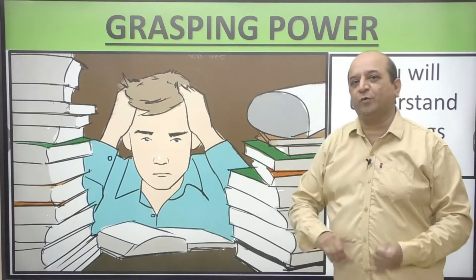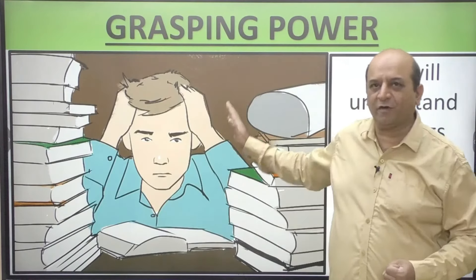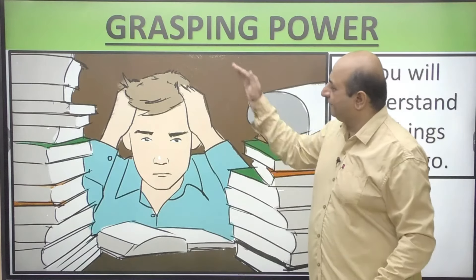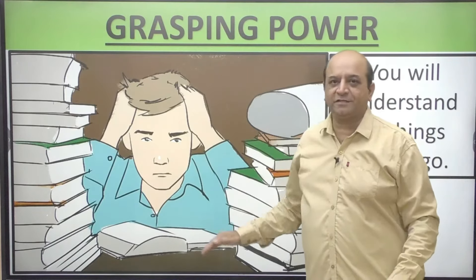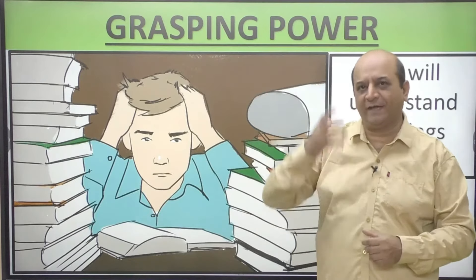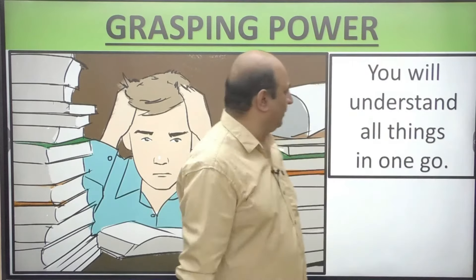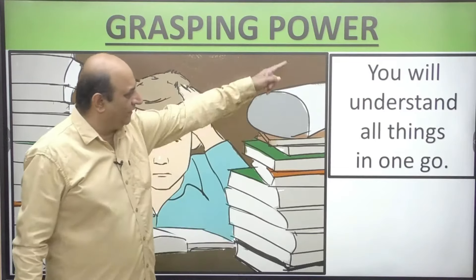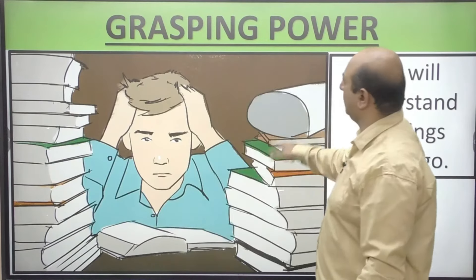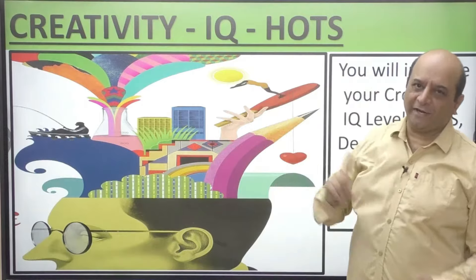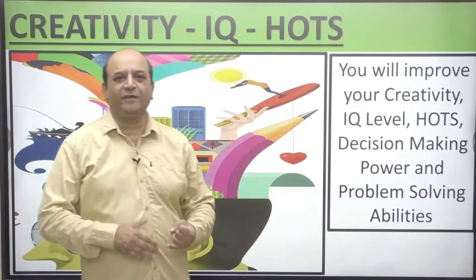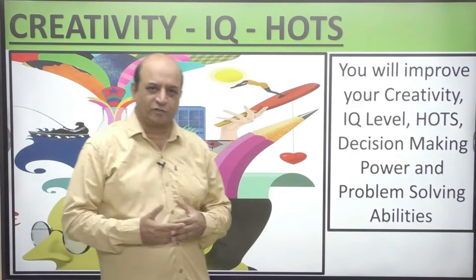The grasping power will also improve. About 30% of people in India have grasping power problems, wherein they need to learn things 4, 5, 6, or 7 times before it goes into the brain. After 1 to 2 months of this course, you will understand all things in one go. Creativity, higher-order thinking skills, decision-making power, and problem-solving ability will also improve.